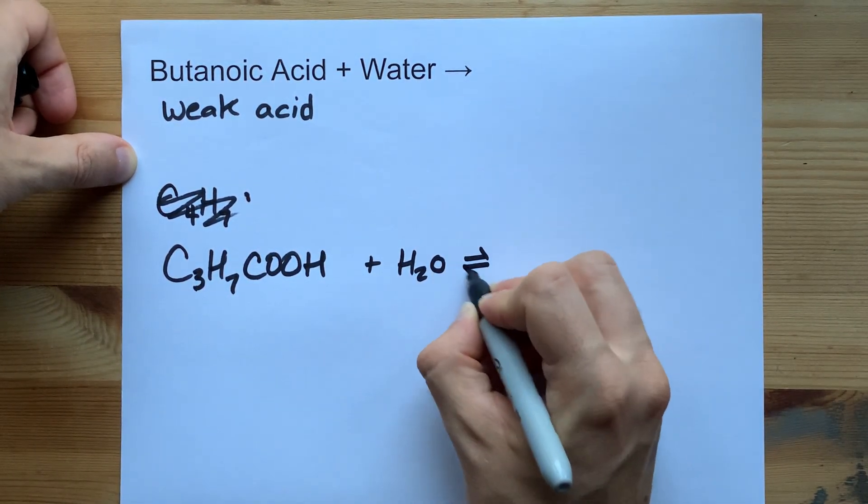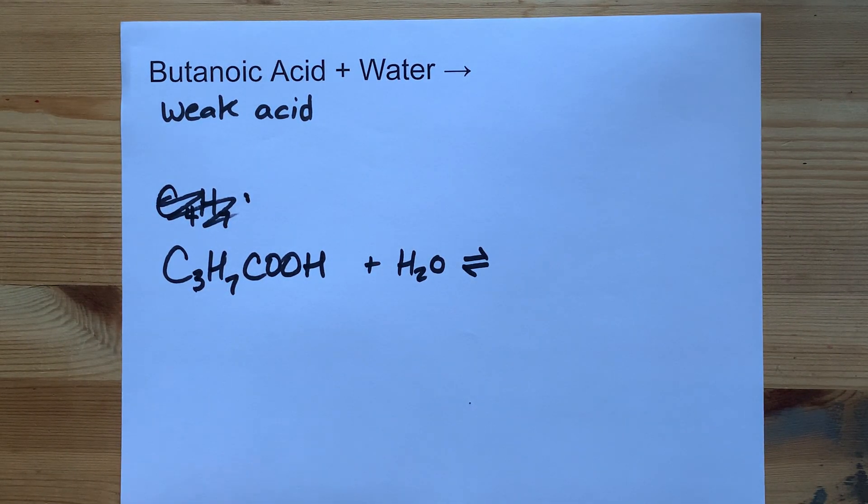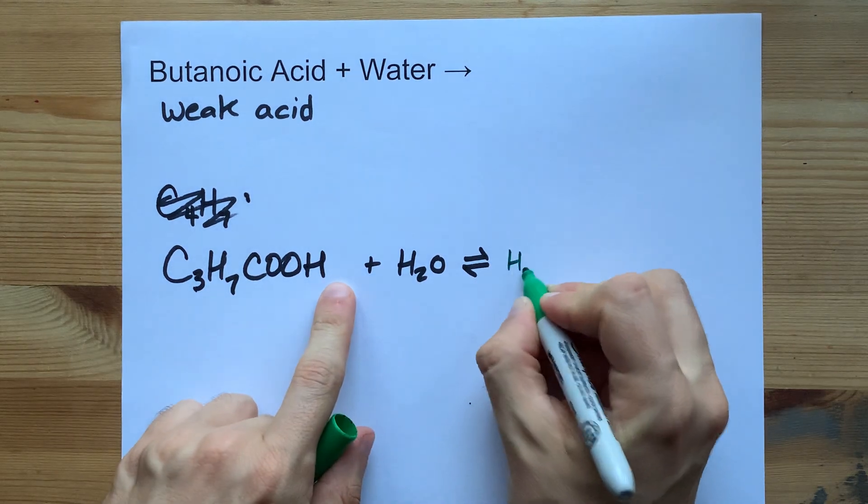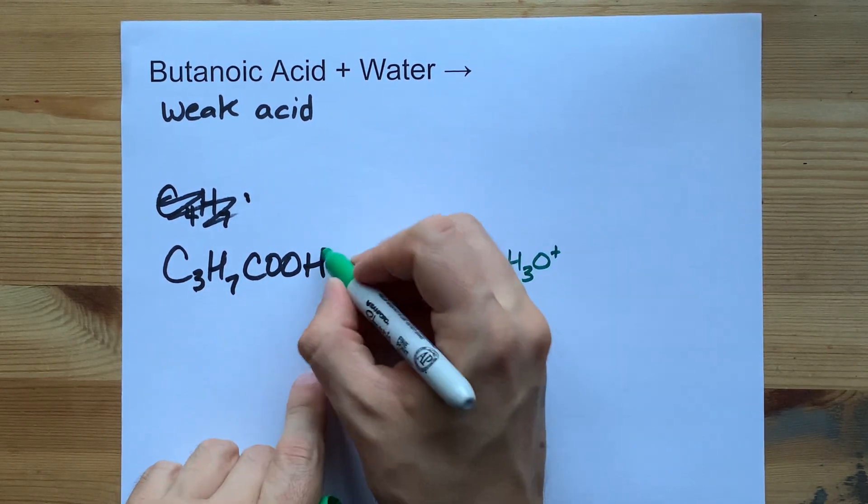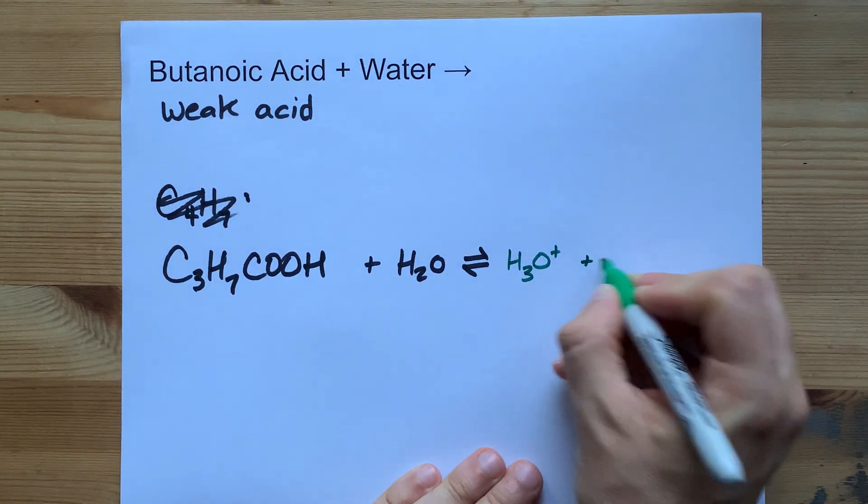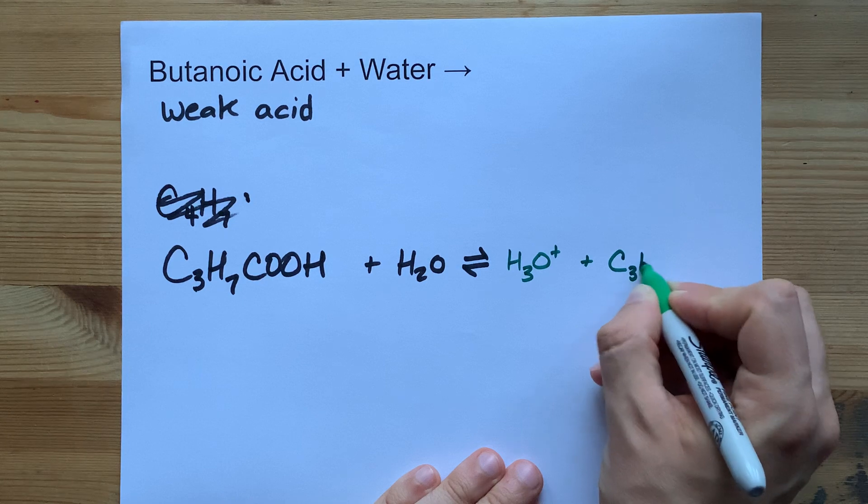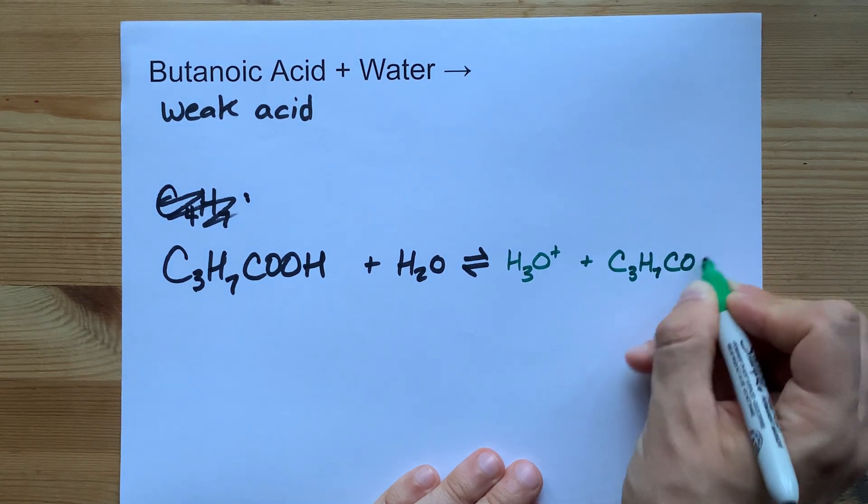it's actually an equilibrium reaction where the acid gives its H away to the water. What that means is you get H3O+, it's a proton donation situation, and you're left with the conjugate base of that acid, C3H7COO-.